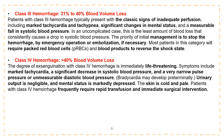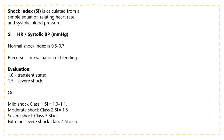Class four hemorrhage: greater than 40% of blood volume loss. The degree of exsanguination is immediately life-threatening. Symptoms include marked tachycardia, a significant decrease in systolic blood pressure, and a very narrow pulse pressure or unmeasurable diastolic blood pressure. Bradycardia may develop pre-terminally. Urinary output is negligible and mental status is markedly depressed. The skin is cold and pale. Patients with class four hemorrhage frequently require repeat transfusion and immediate surgical intervention.